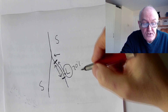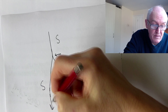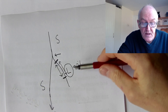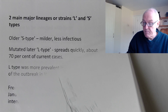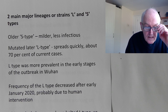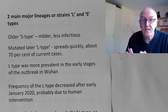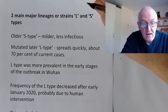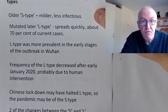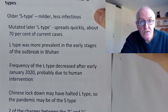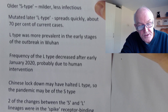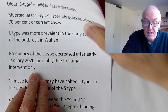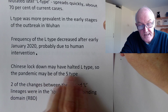We think it's the S type that's probably causing most of the pandemic now. How come the S type seems to be more prevalent when initially the L type was dominant? That's probably because of the lockdown and control measures in China. The Chinese closed down cities, isolated people, and that seems to have reduced the multiplication of the L type. It looks like the Chinese have done us all a big favor by severely restricting the spread of the more virulent, more transmissible L type.